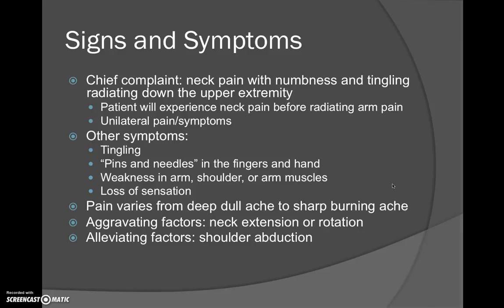Signs and symptoms: patients with cervical radiculopathy typically complain of neck pain accompanied by tingling and numbness radiating down the arm. Pain can vary from a deep dull ache to a sharp burning pain. They may also complain of weakness in the affected extremity and loss of sensation. Pain is typically aggravated by rotation to the affected side and extension, and alleviated by shoulder abduction.